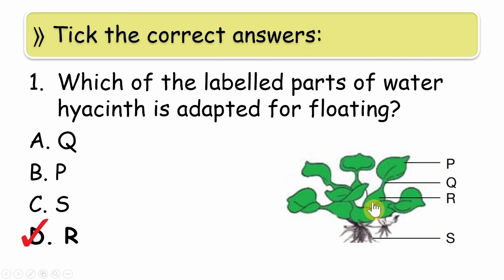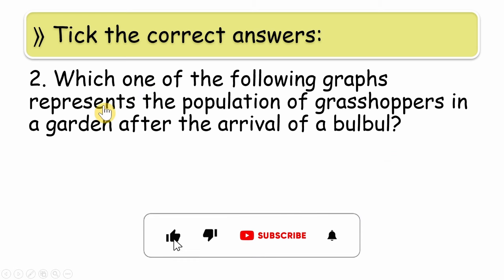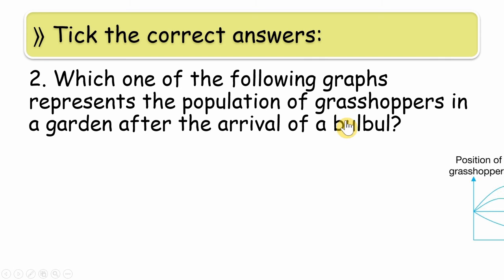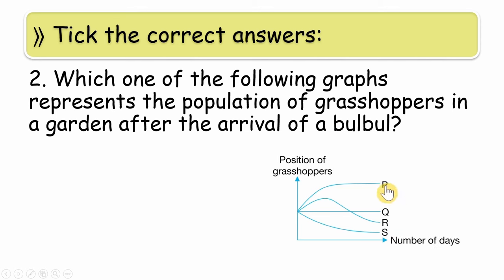Next question: which one of the following graphs represents the population of grasshoppers in a garden after the arrival of bulbul? So the grasshopper population will be affected by the arrival of bulbul. How it will be affected? How will bulbul affect the grasshopper population? We need to identify this.